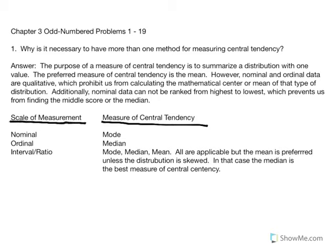The answer is the purpose of a measure of central tendency is to summarize a distribution with one value. We prefer that that measure be the mean. However, nominal and ordinal data are qualitative, meaning that we don't have numbers to work with. This prohibits us from calculating the mathematical center, or the mean, of that type of distribution.